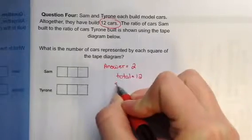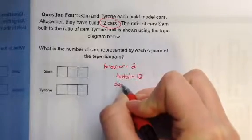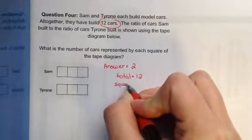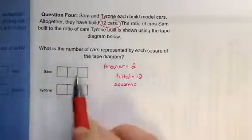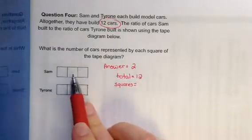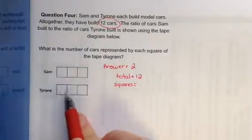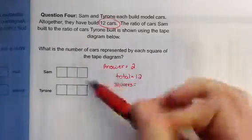Next is to find the number of squares. The number of squares is 1, 2, 3, 4, 5, 6.